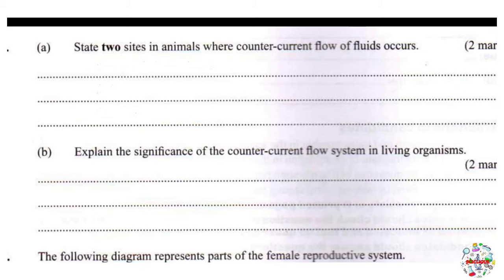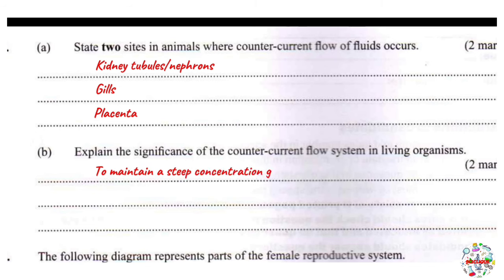Moving on to part B: explain the significance of the countercurrent flow system in living organisms. This question asks why the countercurrent system is important. You can simply write your answer as: to maintain a steep concentration gradient for efficient exchange of materials.